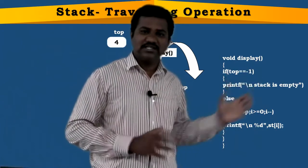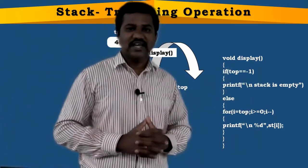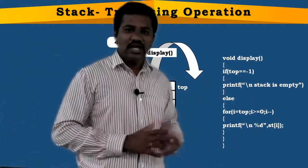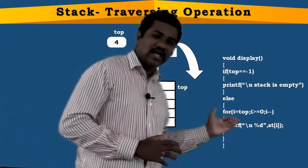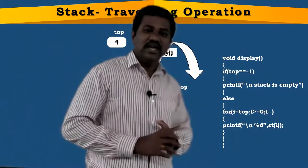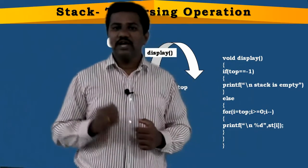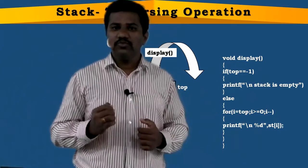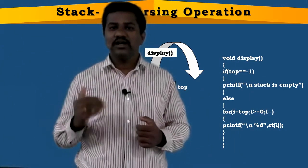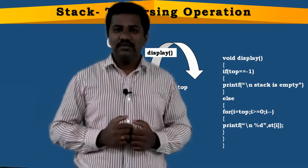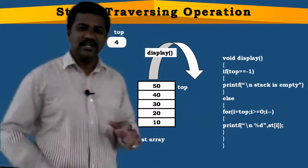If top equals minus one, we print 'stack is empty.' If this condition is false, it goes to the else part. In the else part, we use a for loop, and with the help of that for loop, we are going to print the elements starting from the topmost element to the bottom element.